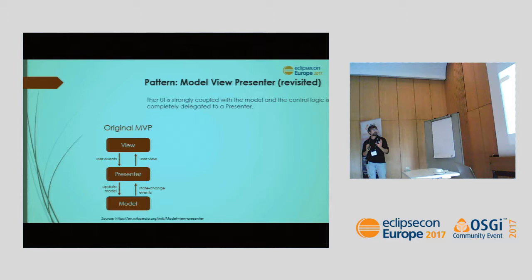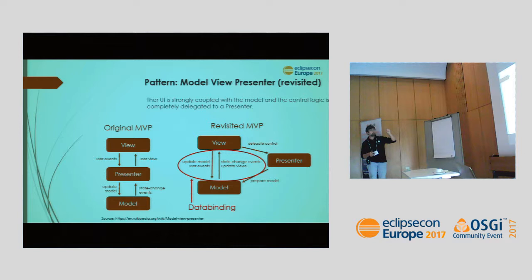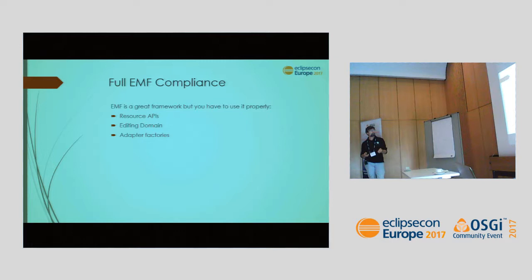We use a kind of Model-View-Presenter pattern. In the original MVP pattern, the view and the model don't see each other — there's a presenter in the middle. Instead, we have the view and model tied together with data binding. The presenter is still there and handles the control logic, but the view and model are bound by data binding.